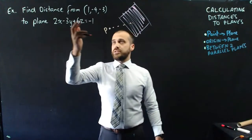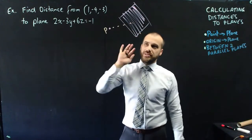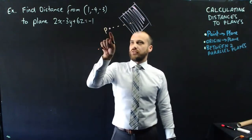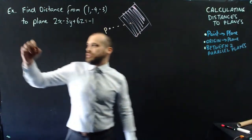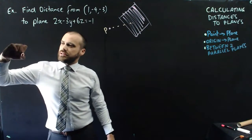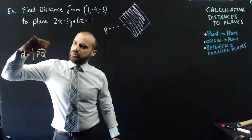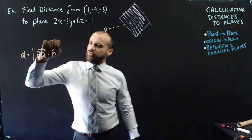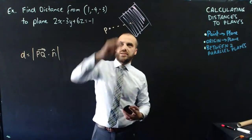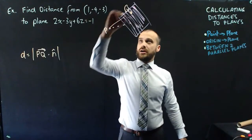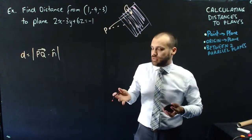Here's our question: finding the distance from the point (1, -4, -3) to the plane 2x - 3y + 6z = -1. The shortest distance from this point to this plane. I already know the formula: distance equals the absolute value of PQ dot the unit vector of N. But I don't know what PQ is because Q is all points — it's just x, y, z.